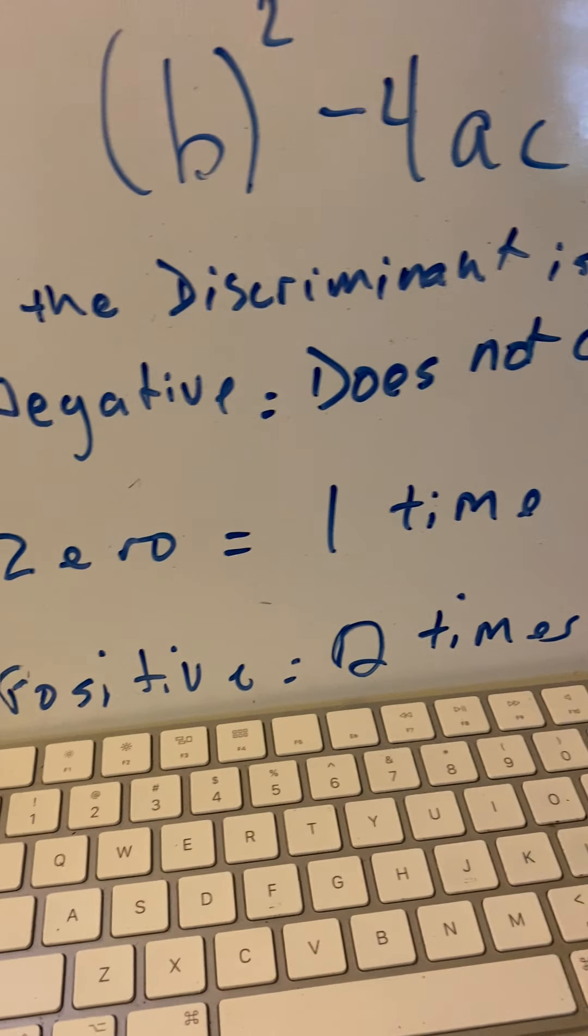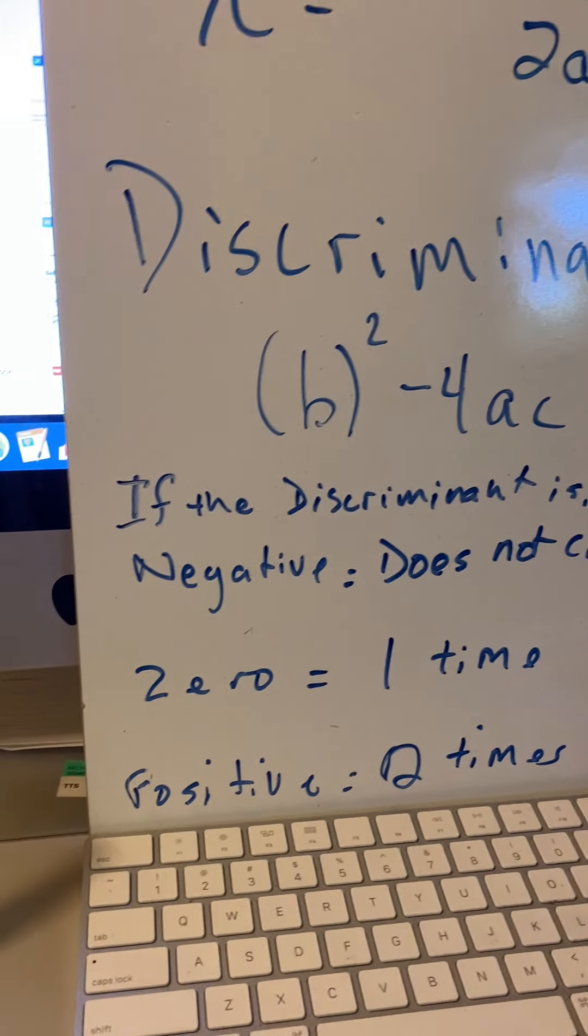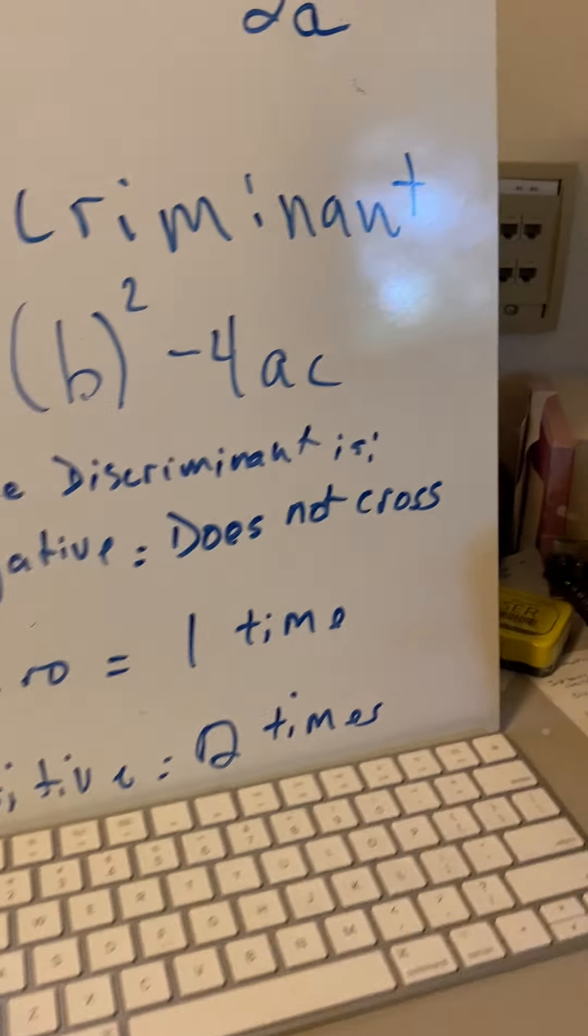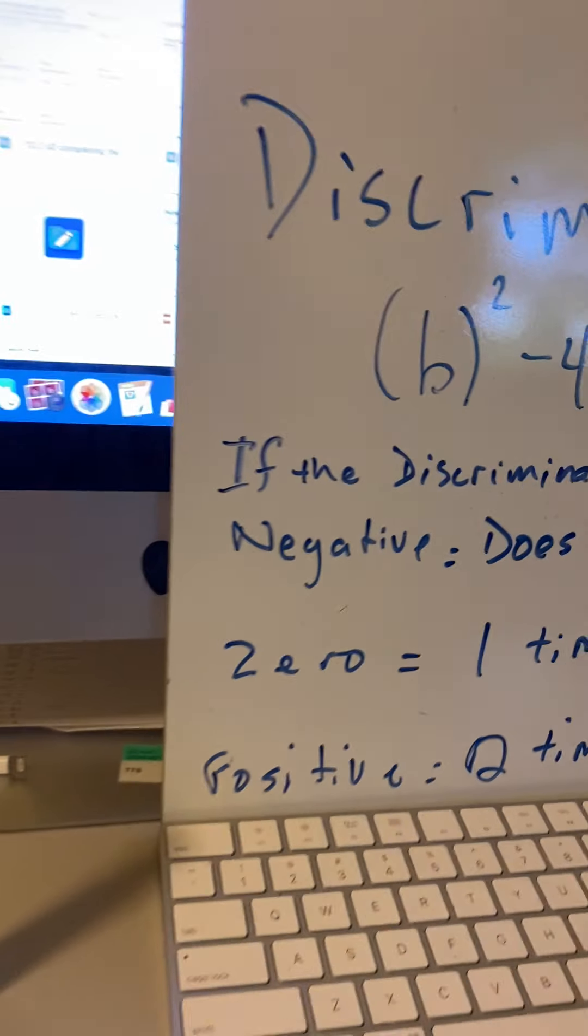Now, if it's positive, it's going to cross it two times. Like most of our quadratics that we've worked with, they've opened up or down and it crosses the x-axis either at two points.